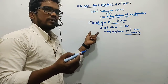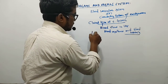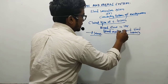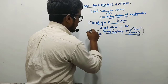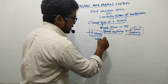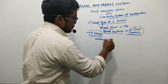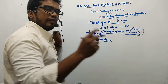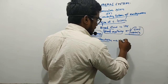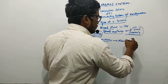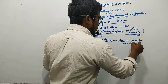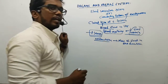The earthworm also possesses a heart alongside blood capillaries and blood vessels. The contractions which occur in the heart are important because they help in the flow of blood in one direction.